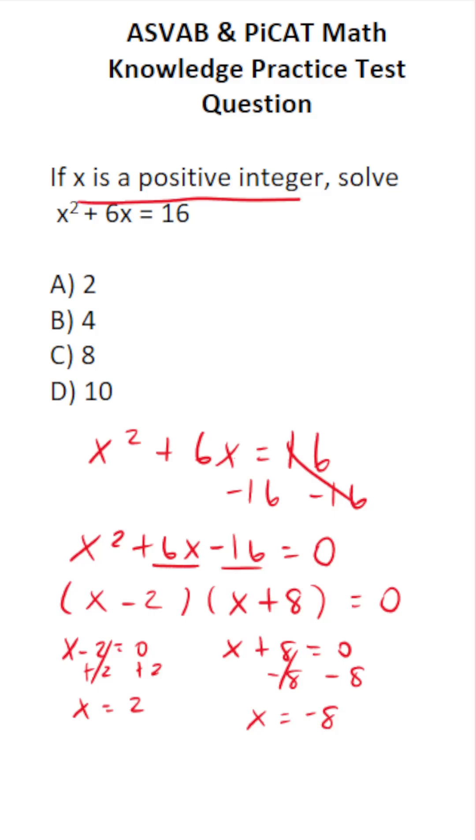What was the stipulation in this question? x has to be a positive integer. This is a negative integer, so our only solution is x equals 2. So this one is A.